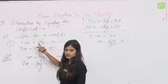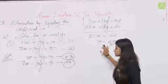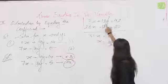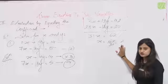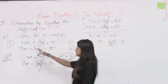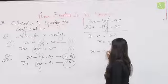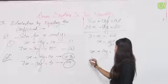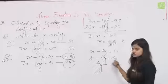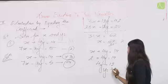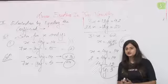अब x की value किसी भी equation में put करते हैं। First equation: x + 4y = 14, so 2 + 4y = 14, so 4y = 12, so y = 3। तो x = 2 और y = 3। यह था equating the coefficient method।